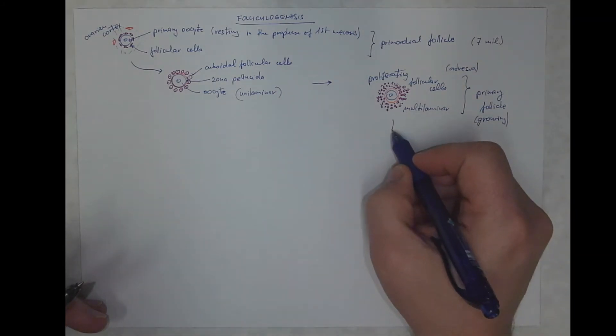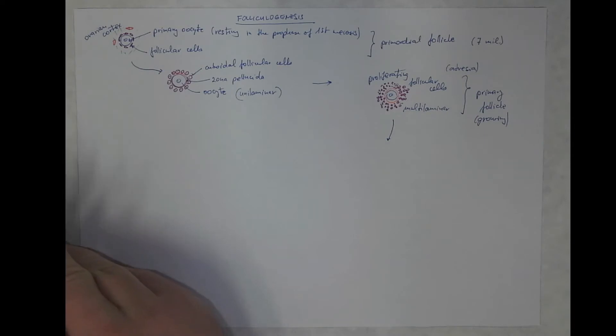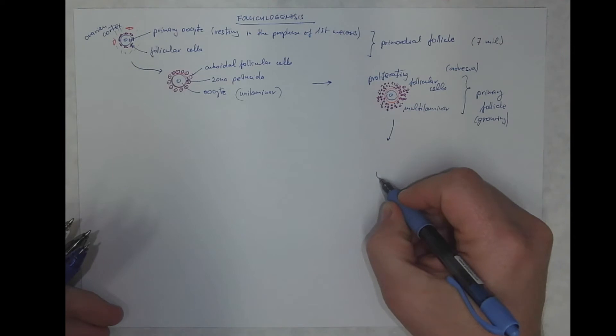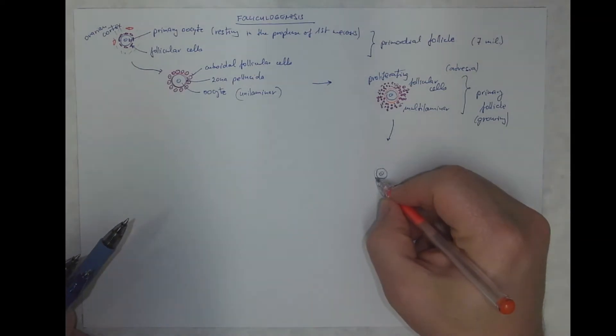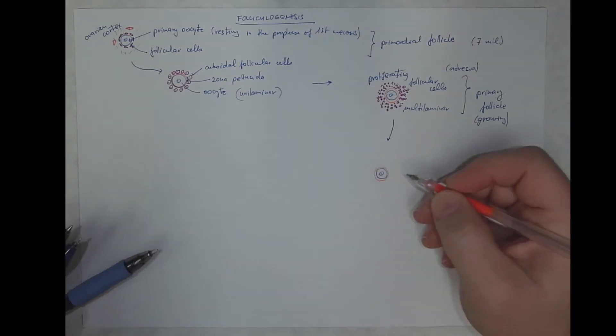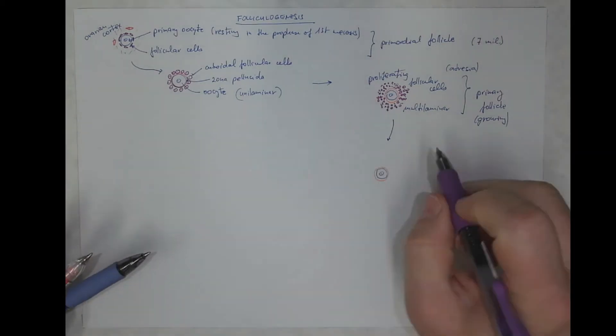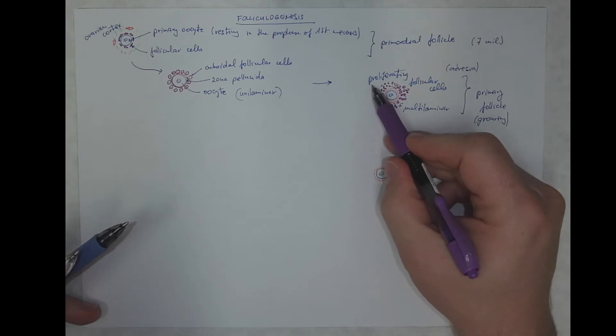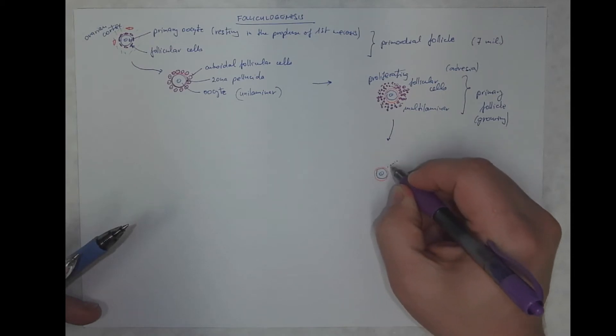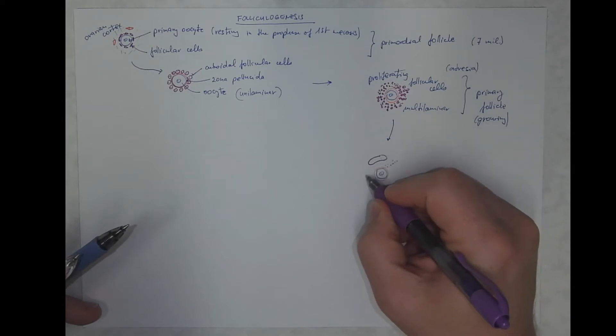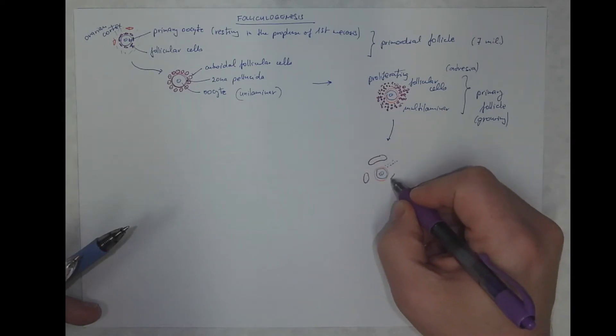Next stage will be the secondary follicle. We still got the oocyte surrounded by the glycoprotein membrane called zona pellucida. But during the further proliferation of follicle cells, they become smaller and smaller, and in this population cavities will emerge. Cavities will be formed.